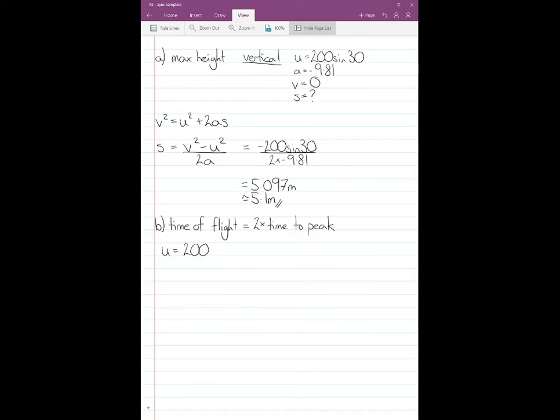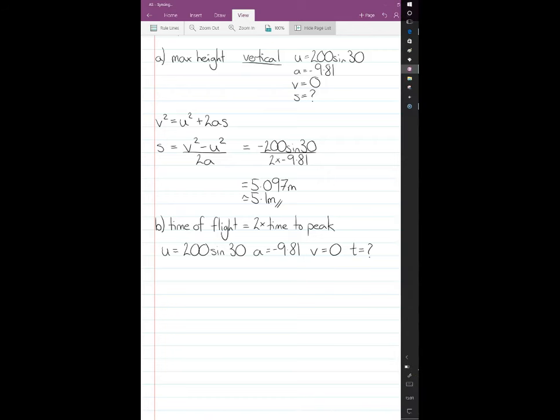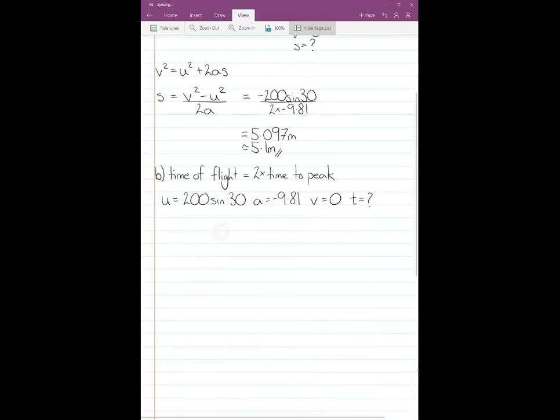Again, I'm in the vertical, so I'll just remind myself what I'm using. u is 200 sin 30, a is minus 9.81, and v is still going to be 0 because it'll be 0 at the peak. But this time it's the time that I'm trying to find. So next thing, pick the equation: v equals u plus at. Then I will rearrange to make t the subject. So t equals v minus u over a.